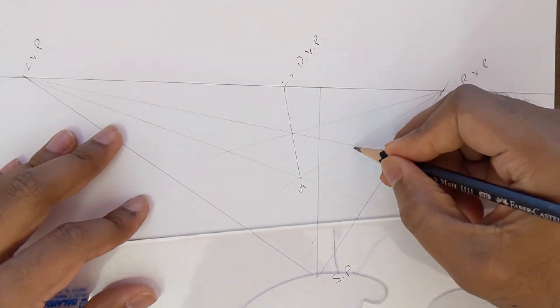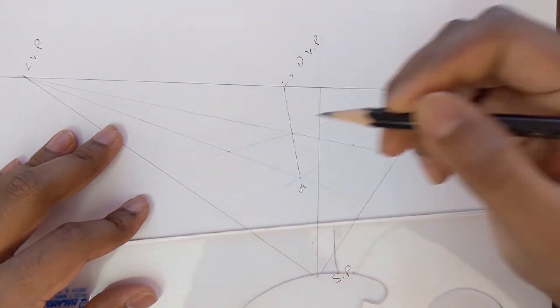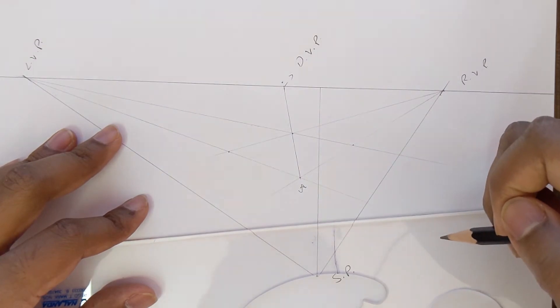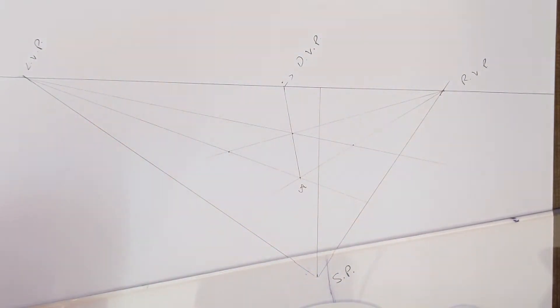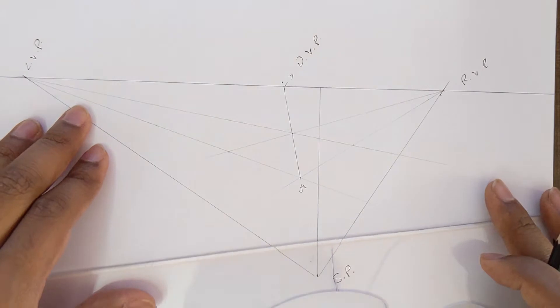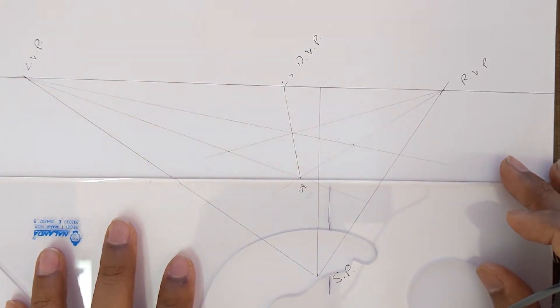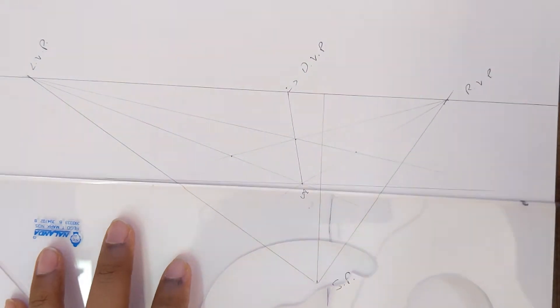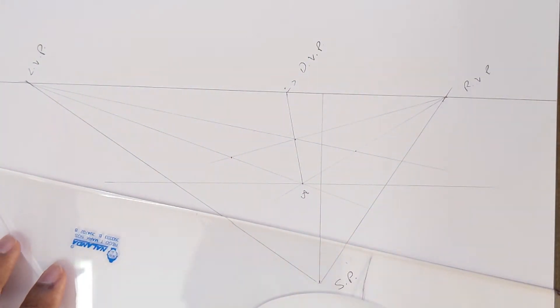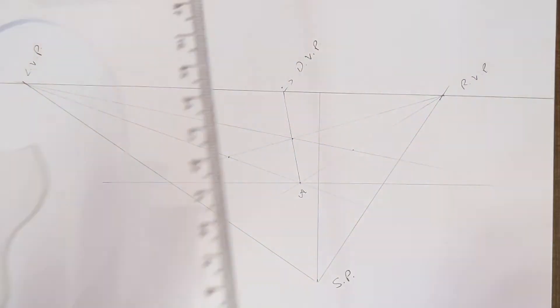Once we do this, we have a perfect square in perspective. Now next step would be to determine the proper height of our cube. To do that, let us draw a horizontal line from the point A.